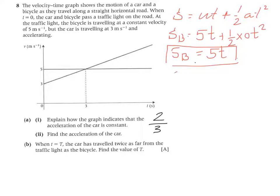I am going to do a similar thing for the car. So SC for the car. UT, so 3T because its initial speed is 3 meters per second. Plus a half times A, its acceleration, 2 over 3 times T squared. And if we simplify that we get 3T plus a third T squared. So that is the displacement of the car.